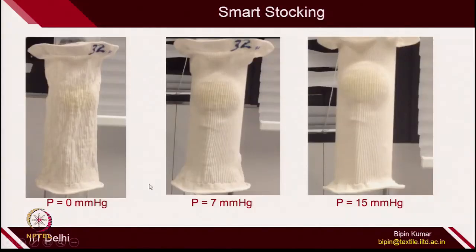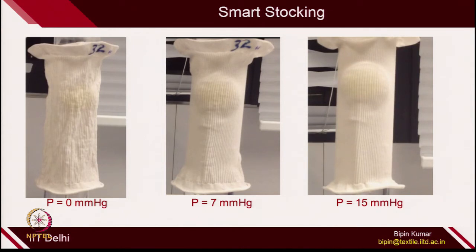Once you integrate these types of smart filaments — where knitting plays a very important role in controlling and placing the smart filament in the structure — you can then activate these materials and generate different levels of pressure. In the loose state, you can wear it, and automatically the fabric will become self-tight and generate different levels of pressure. You can reverse this also, with the help of heat, to make the garment self-tight.